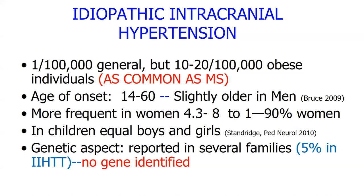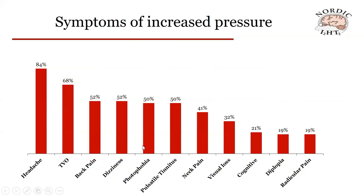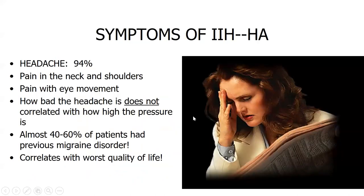There's a genetic component — no single gene has been identified, but families are affected. The most common symptom of increased intracranial pressure is headache, followed by transient visual obscurations (dim-outs of vision), back and neck pain — especially between the shoulder blades — dizziness, light sensitivity, and pulsatile tinnitus, a whooshing noise, in almost half of patients. Visual loss occurs in about a third, and double vision in about 20 percent.